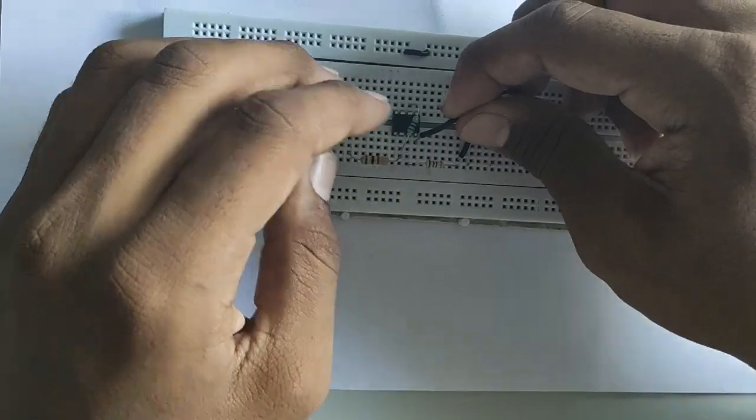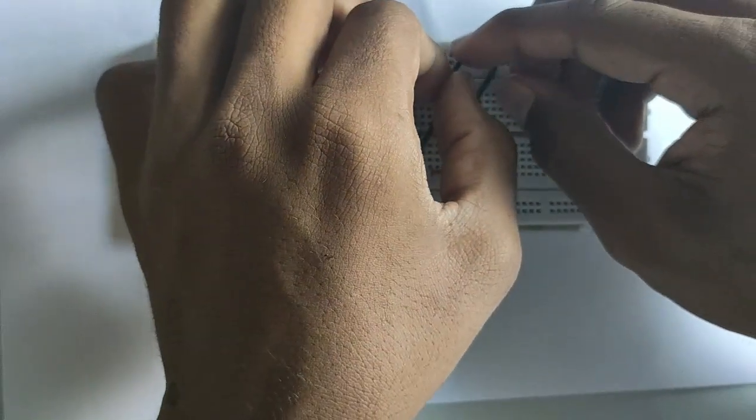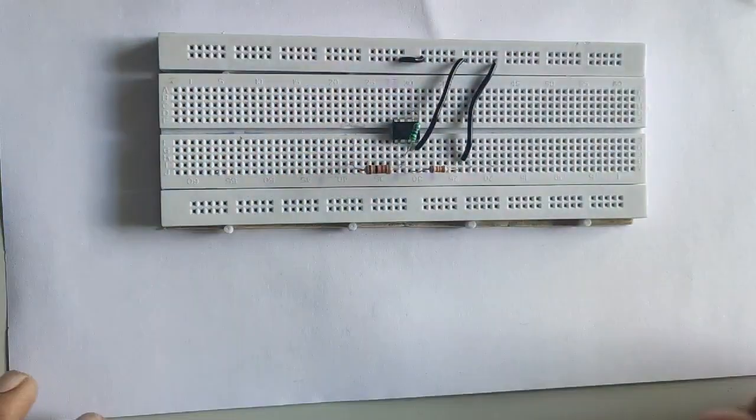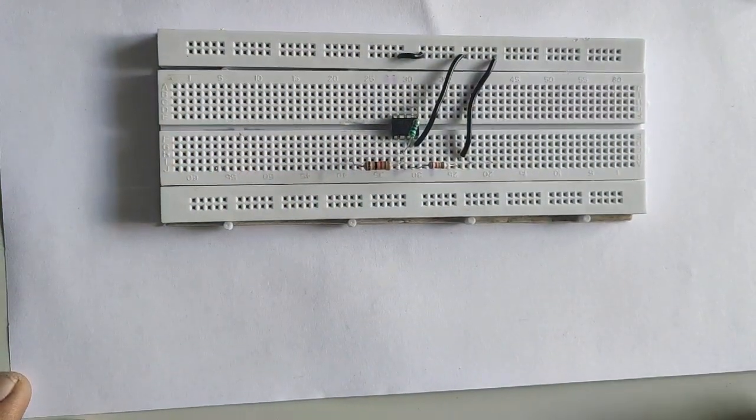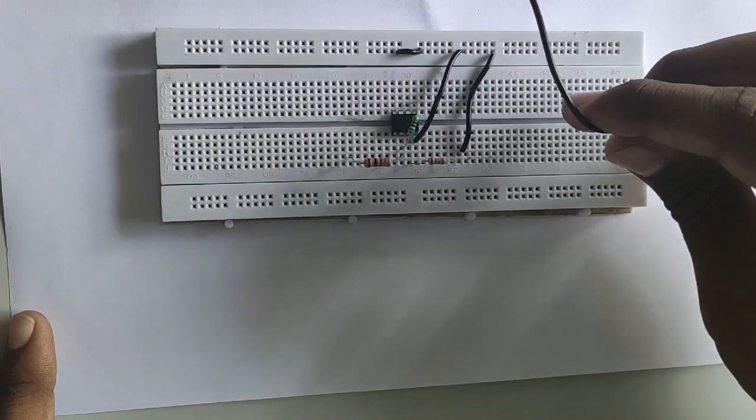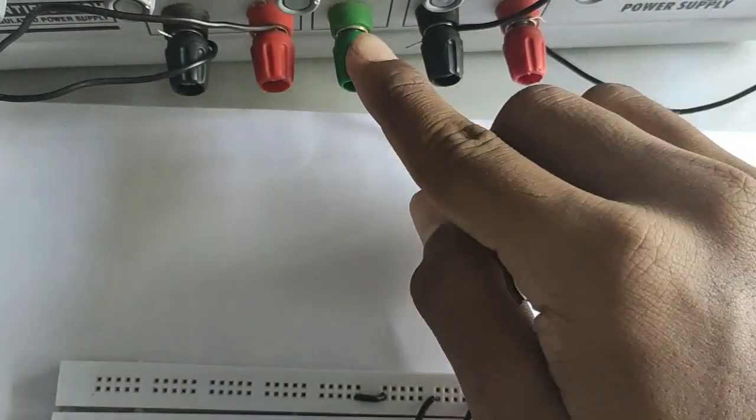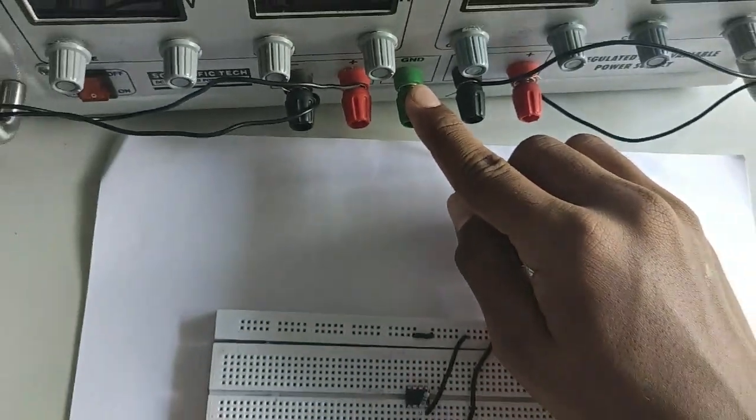And now, we are going to ground the fourth pin of the IC. You might have noticed that the RPS has a common ground. So, let us take that connection and fix it to the ground which we are given in the breadboard.